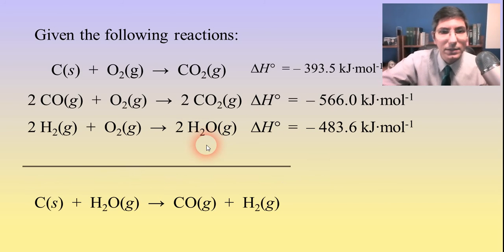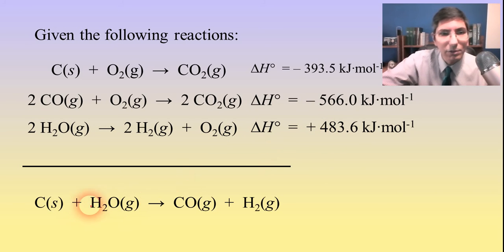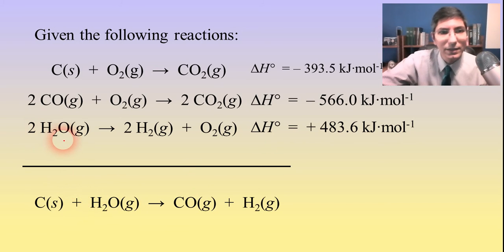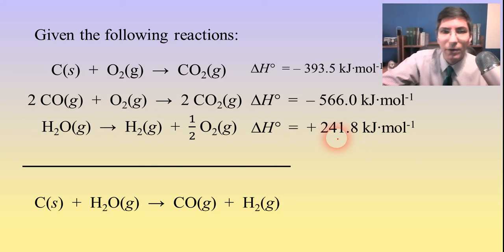I'm going to flip reaction number 3, which changes the sign of delta H — it's now positive. Water also needs to have a coefficient of 1 instead of 2, so I'm going to divide this reaction by 2, which divides delta H by 2 as well. Taking positive 483.6 and dividing by 2 gives a delta H of positive 241.8. Now water has a coefficient of 1.